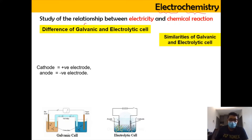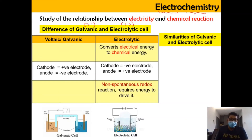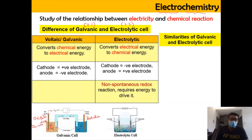Galvanic cell we will learn in subtopic 3.1 and electrolytic cell in 3.3. It is important to compare and contrast the two types of cells at the beginning of the chapter. For galvanic cell, it involves the changing of chemical energy into electrical energy, because the chemical process involves oxidation at anode and reduction at cathode. The electrons produced at the anode pass through a copper wire, producing electricity — so galvanic cell converts chemical energy to electrical energy.